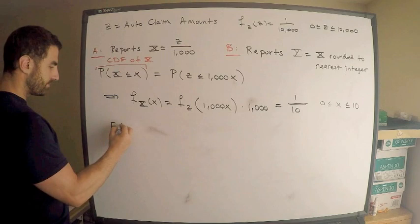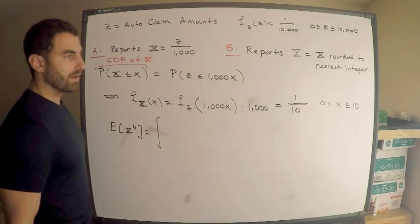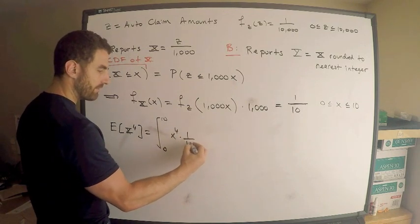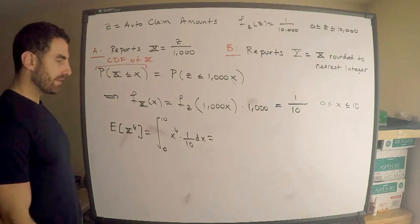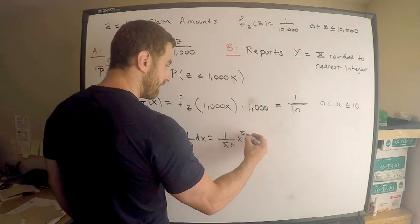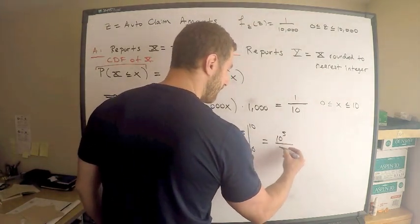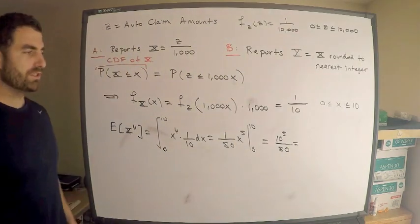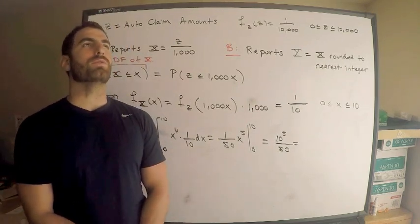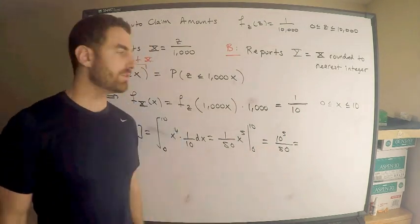Now, how do I get the fourth moment of X? The fourth moment is by definition the integral from 0 to 10 of x to the fourth times 1/10. This gives 1/10 times x to the fifth over 5, evaluated from 0 to 10, which is 10 to the fifth over 50 — that's 100,000 over 50 — which equals 2,000.